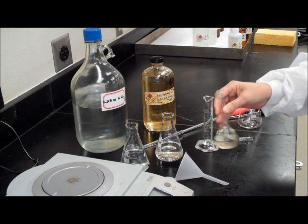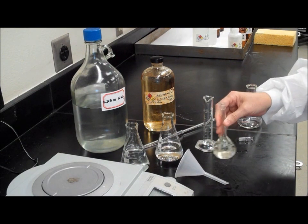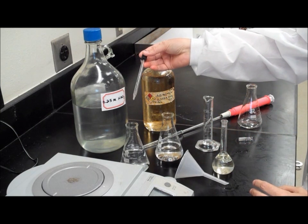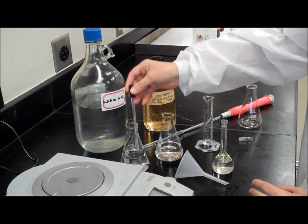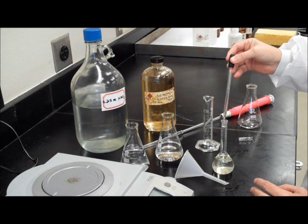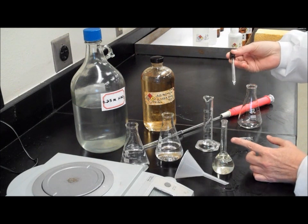Swirl the flask gently to mix. Next, using a medicine dropper, add more nitric acid to your volumetric flask until the meniscus reaches the line on the neck.